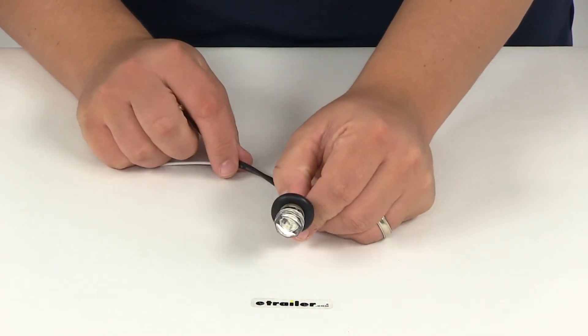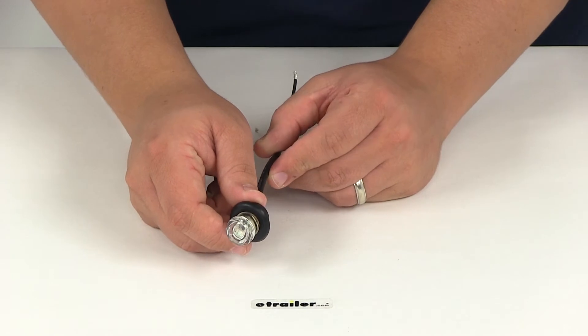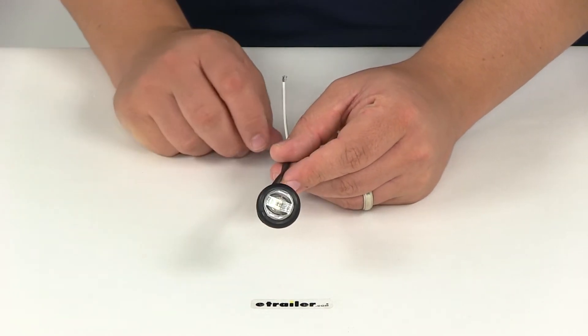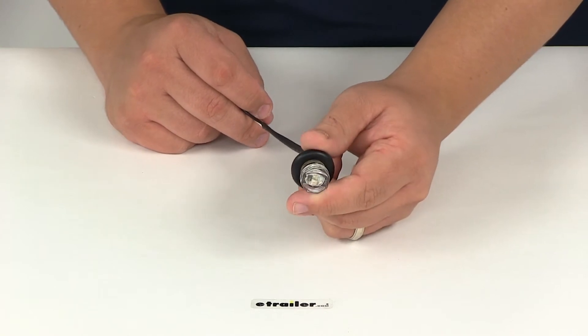This is Department of Transportation compliant. It meets FMVSS 108 requirements in any 360 degree position. The shape of the light itself is round.